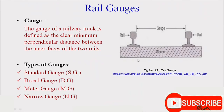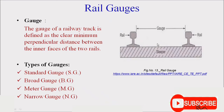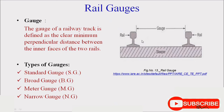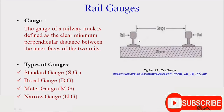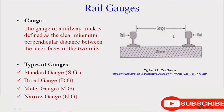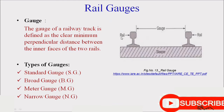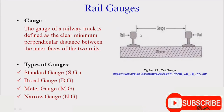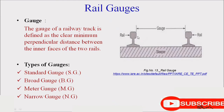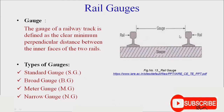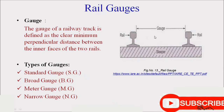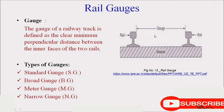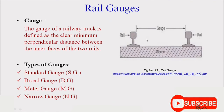Rail gauge is the inner distance between the two rails — it can also be called the width of the railway track.